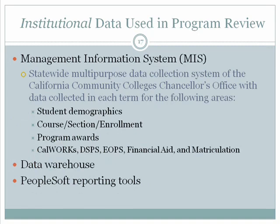In contrast to program data, institutional data is currently and anticipated to be accessed through three sources. First, Management Information System, or MIS, is a statewide multipurpose data collection system of the California Community College's Chancellor's Office, with data collected from 72 districts and 109 colleges in each term for the following areas: student demographics, courses, sections, and enrollments, program awards, CalWORKs, DSPS, EOPS, financial aid, and matriculation. Second, the college's data warehouse, which is anticipated to allow access to relational databases in PeopleSoft. And finally, locally developed reporting tools for PeopleSoft provide additional sources of data.